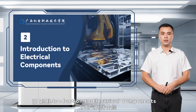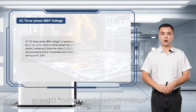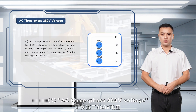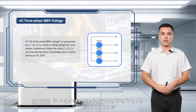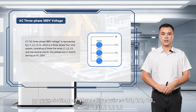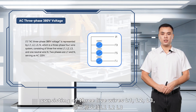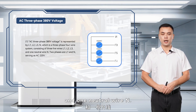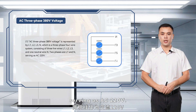Introduction to Electrical Components. Component 1: AC 3-phase 380 volts voltage is represented by L1, L2, L3, N, which is a three-phase four-wire system, consisting of three live wires L1, L2, L3, and one neutral wire N. Two phases are L1 and N, serving as AC 220 volts.